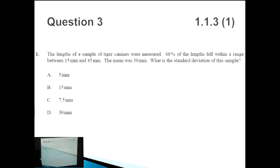Let's move on to the next question. Once again, we're talking more about standard deviations. The lengths of a sample of tiger canines were measured. 68% of these lengths fell within a range between 15mm and 45mm, with a mean of 30mm. What is the standard deviation of this sample? So you have to recognize this number. 68%, big number.